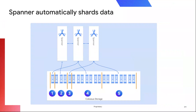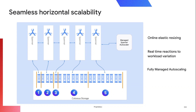As Spanner observes your workload, data is automatically split to distribute the workload across available compute nodes. As workload and data size grow and shrink, Spanner automatically splits and merges data so all available compute capacity is utilized. This sharding enables arbitrary horizontal scalability. When additional compute capacity is added, Spanner redistributes data splits across servers. Combined with architectural separation of compute and storage, this allows real-time elastic resizing. With fully managed auto-scaling, these operations are seamless and natively integrated.